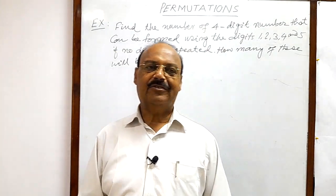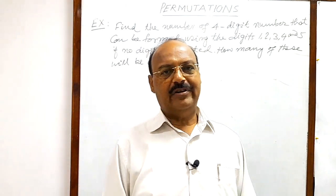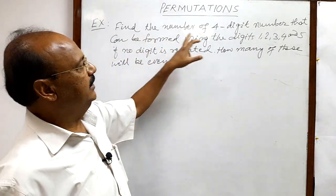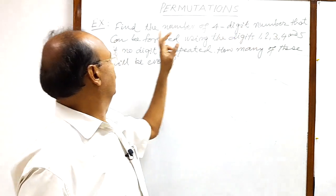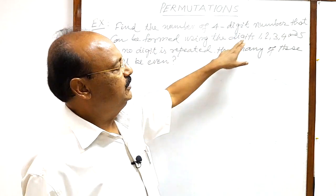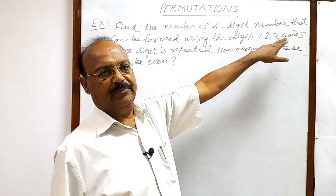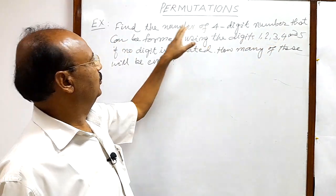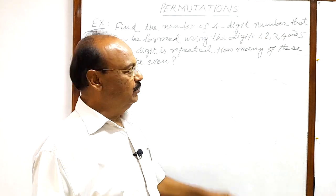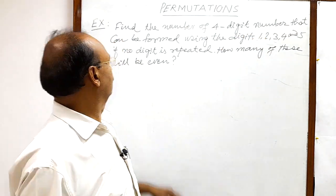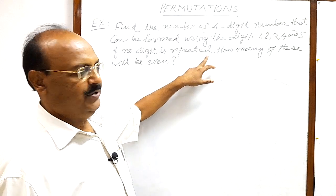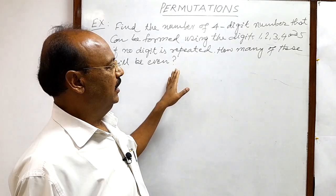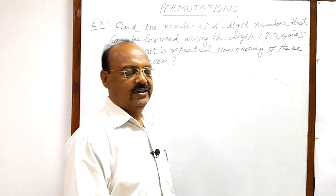Welcome students. Today we are going to discuss a very important and interesting question from the topic of permutations. The question is: find the number of four-digit numbers that can be formed using the digits 1, 2, 3, 4, and 5, if no digit is repeated. Another part of the question is: how many of these will be even?